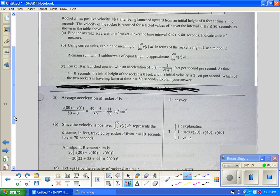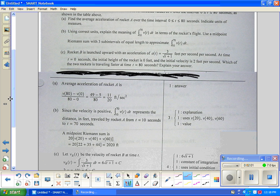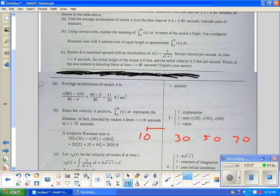If you're going to use the midpoint, you have ten, thirty, fifty, seventy. Your gap is twenty. Your gap is twenty. Your gap is twenty. The midpoint is V of twenty. Your midpoint here is V of forty. Your midpoint here is V of sixty.